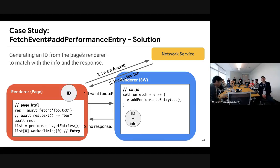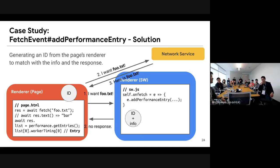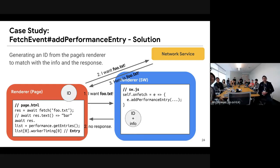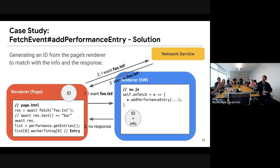The solution is a little tricky. We originally had an ID called request ID. We can get this ID from the service worker's render process, bundle the ID with the timing info together, and return the pair to the renderer for the page. After the renderer gets the response from the network service, we can merge them together. It's a bit tricky but we could solve the issue like that.